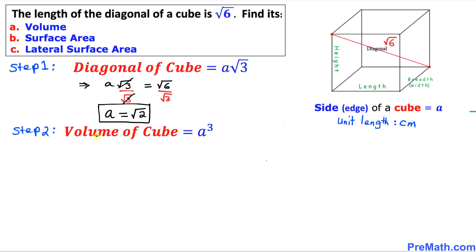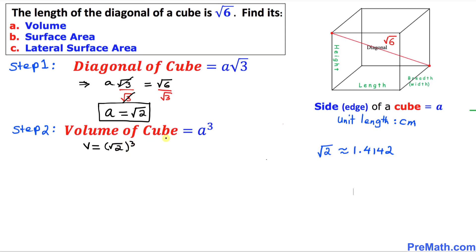In step number two, we are going to find the volume of the cube, and the formula is a cubed. Volume equals a cubed, and in our case 'a' is square root of 2. We know that square root of 2 is approximately 1.4142, so 1.4142 to the power of 3 is approximately 2.83 centimeter cube.